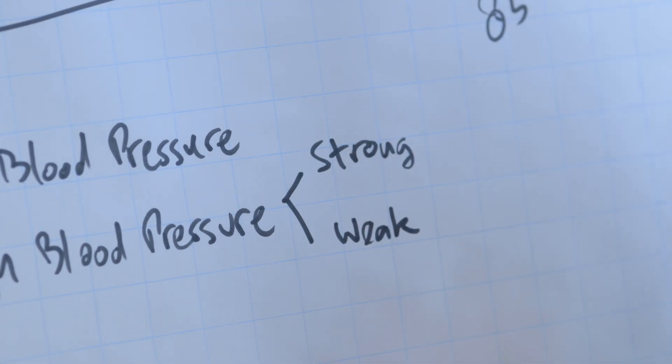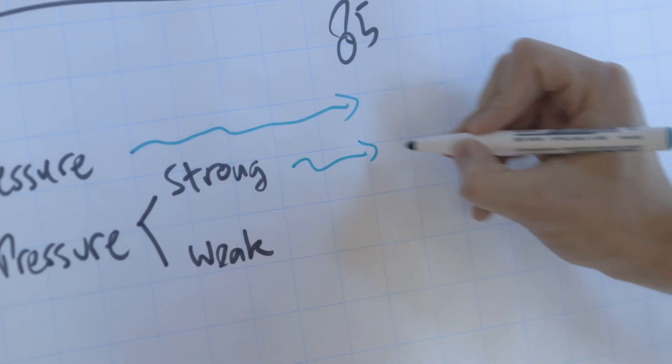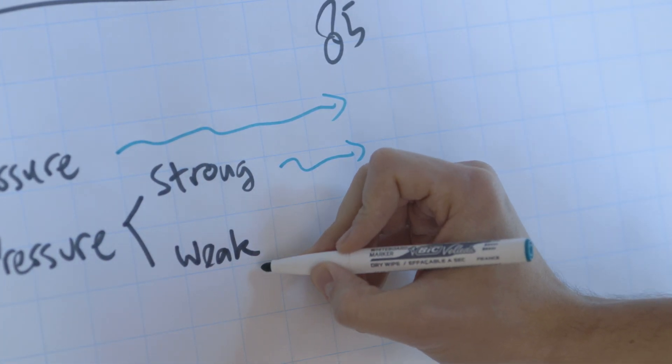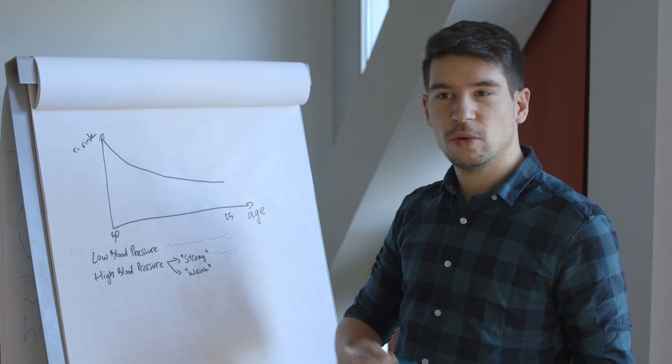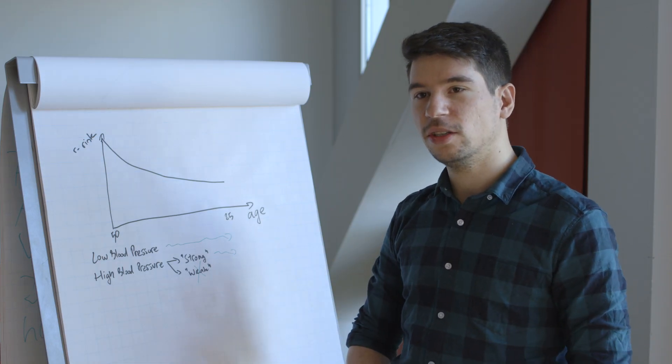At age 85 the low blood pressure patients are still there. The strong ones will make it there. However the weak will not be in the population at 85. It's just a comparison between different populations in fact. It's not a change in risk.